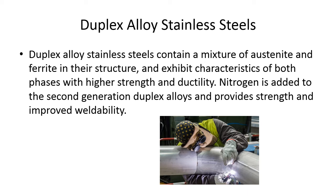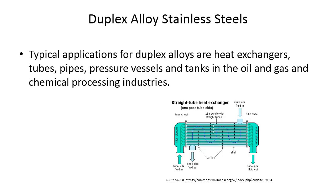Duplex alloy stainless steels contain a mixture of austenite and ferrite in their structure and exhibit characteristics of both phases with higher strength and ductility. Nitrogen is added to second-generation duplex alloys and provides strength and improved weldability. Typical applications for duplex alloys are heat exchangers, tubes, pipes, pressure vessels, and tanks in the oil and gas and chemical processing industries.